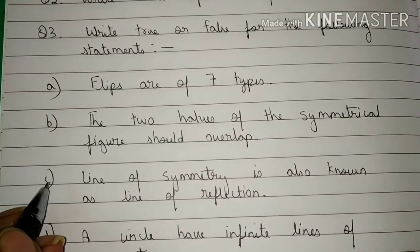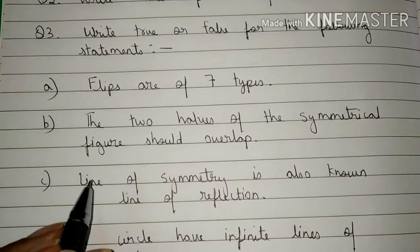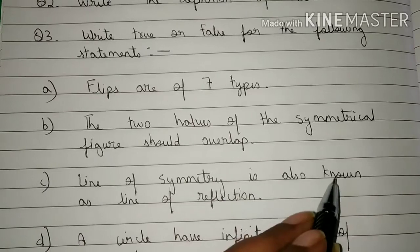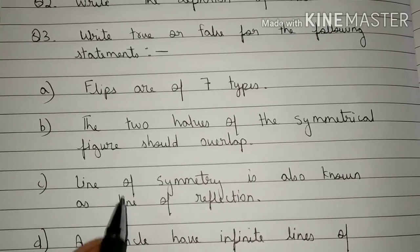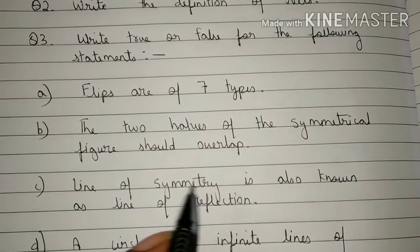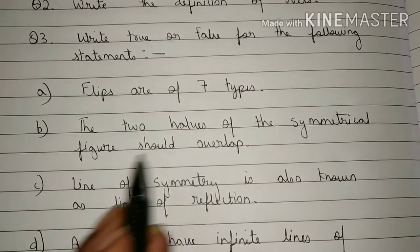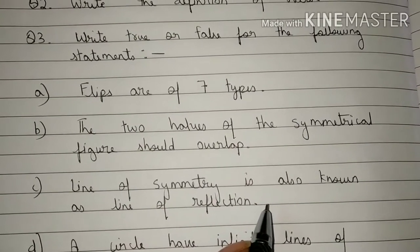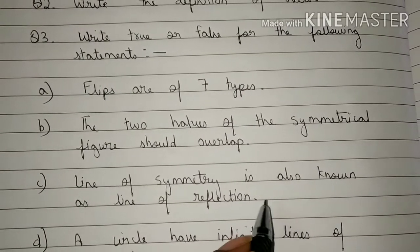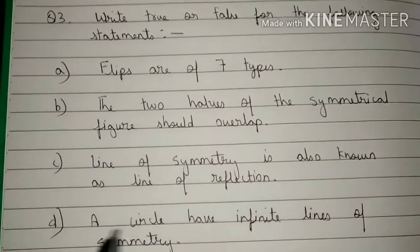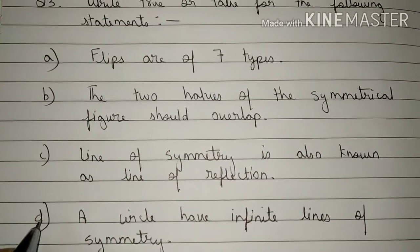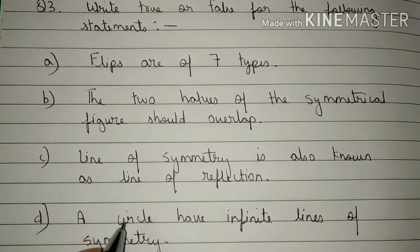Now come to Part C — the statement is: Line of symmetry is also known as line of reflection. Is this statement true or false? You are going to write your answer here.